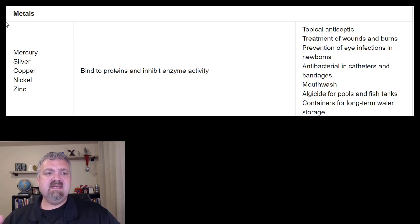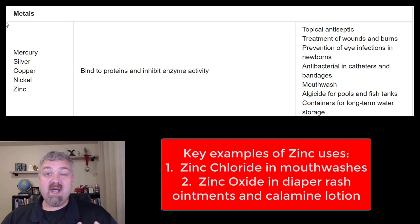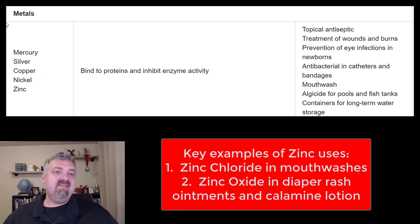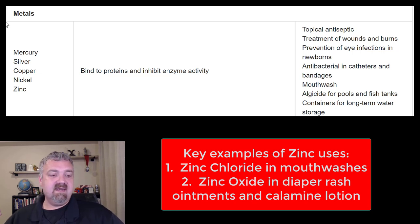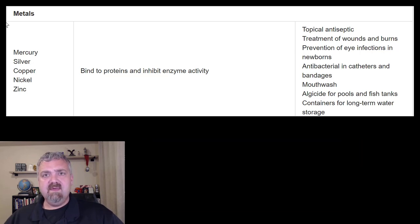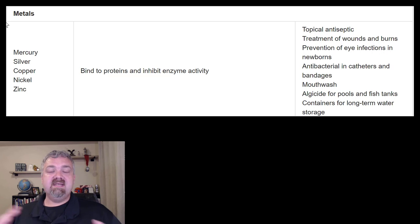Then nickel and zinc — not as many examples with nickel, but with zinc you've got zinc chloride found in some mouthwashes. Zinc oxide — like the stuff used on diaper rash when babies are young — and some dandruff shampoos have zinc oxide in it, as does calamine lotion. Those are some examples of the heavy metals, which are very antimicrobial because of how they bind up proteins and stop enzymes from functioning.